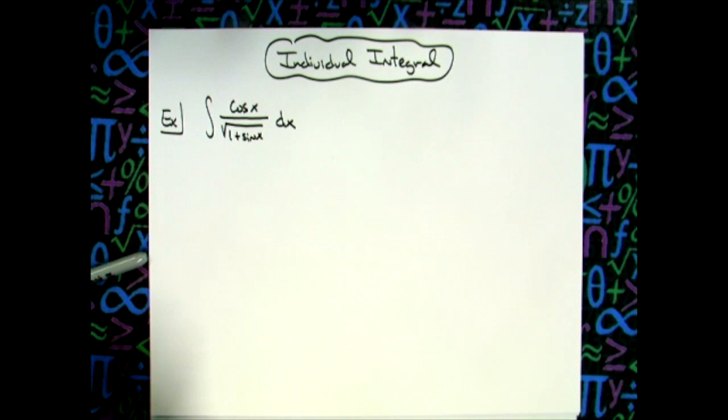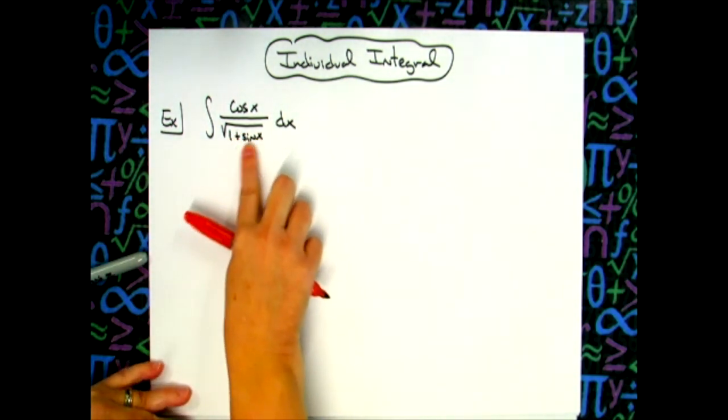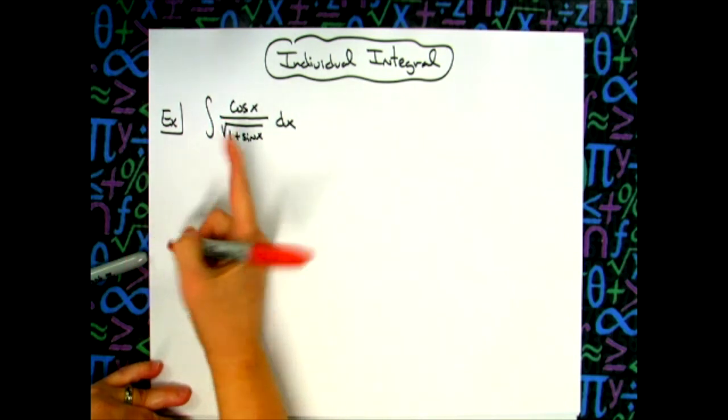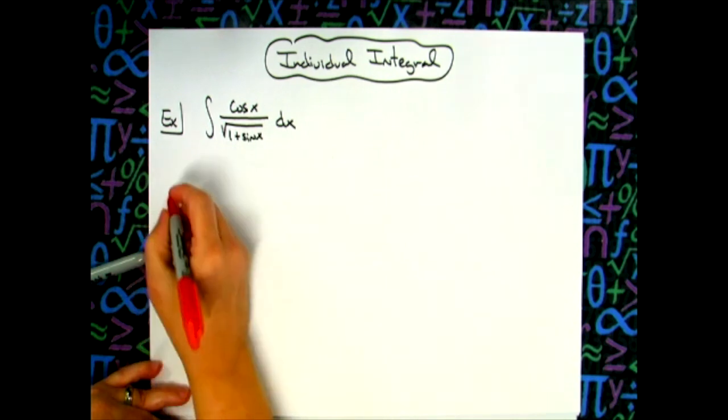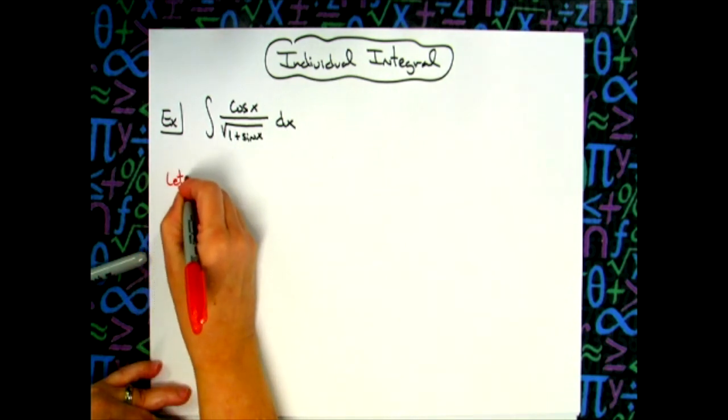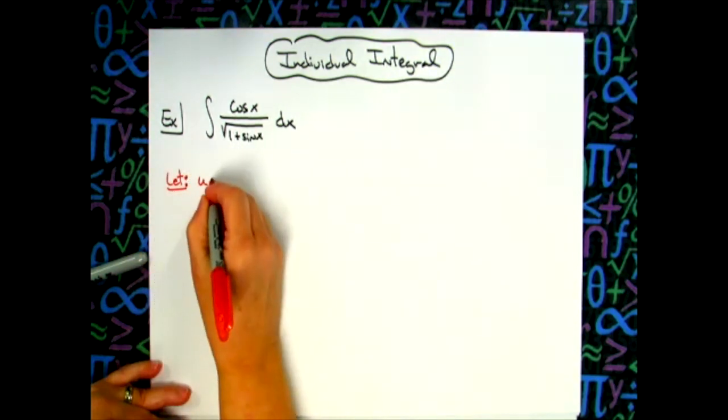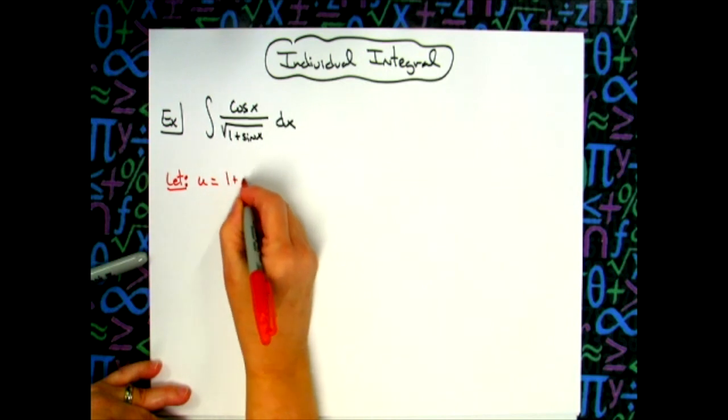All right, so our first step would be to determine what our u is going to be. Typically, we do like to do the inside part of that denominator, and also knowing that the derivative of sine is cosine, that's going to allow that to cross out in a little bit. So we're going to let our u equal 1 plus sine x.